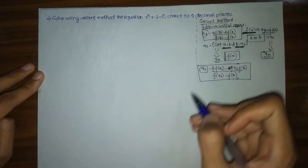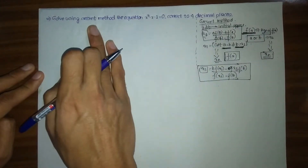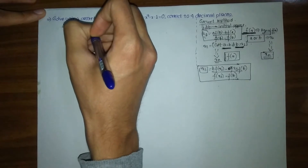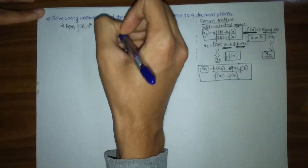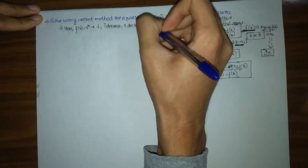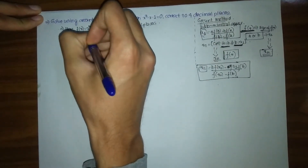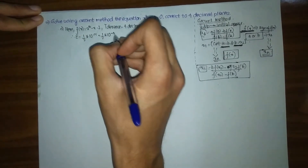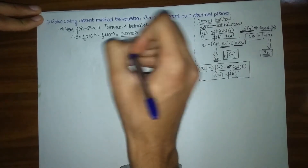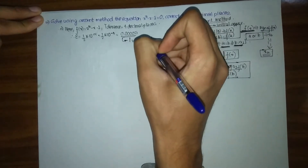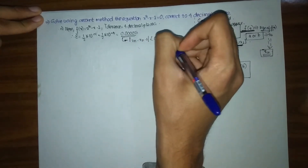To know more about the false position method you can check the link in the description box below. Now for the solving process: here we have fx equals to x cubed minus x minus 1, and our tolerance is given as 4 decimal places. The error E is given by 1/2 times 10 to the power minus n, which equals 1/2 times 10 to the power minus 4, which is equal to 0.0005.